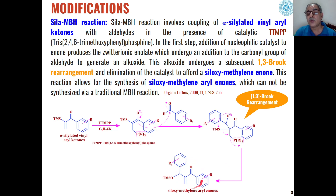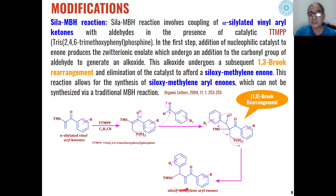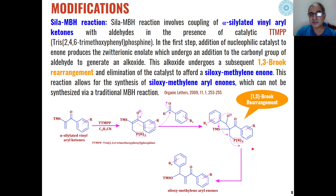So basically, alpha-silylated vinyl-aryl ketones are converted into siloxymethyl aryl enones. This is a modification of the MBH reaction which is called the Sila-MBH reaction.